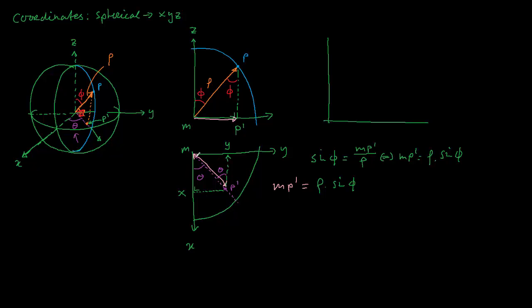So the x-coordinate would be here, this part, so the x-coordinate is nothing else than from M to x which is M P accent times the cosinus of theta. Okay, we fill in this part over there, so we get x is rho sinus phi times cosinus theta.